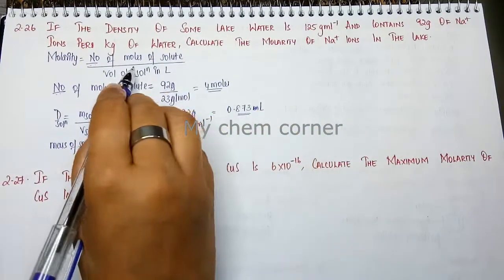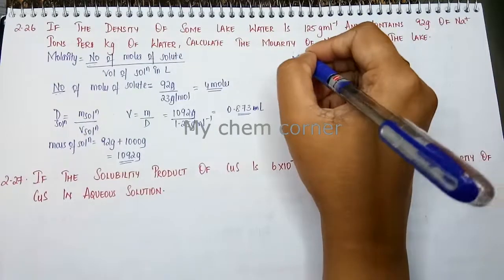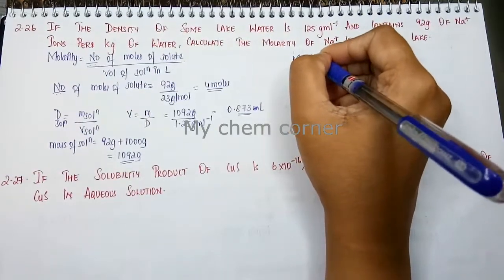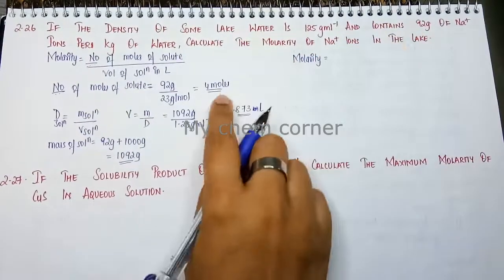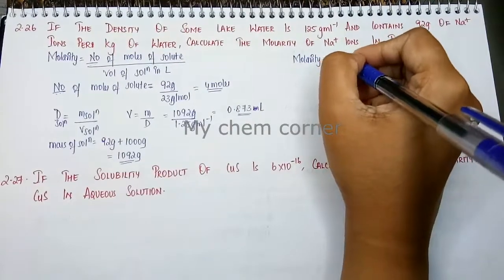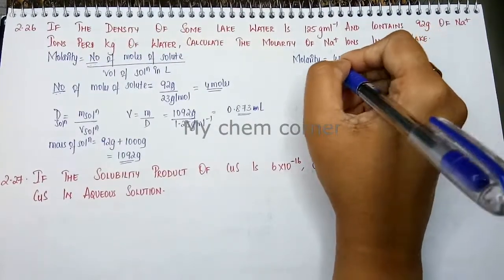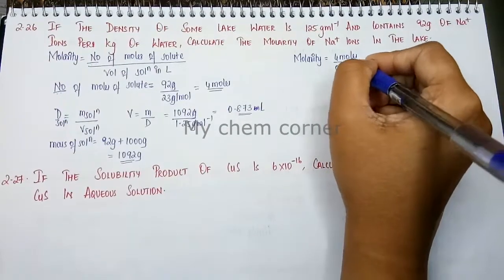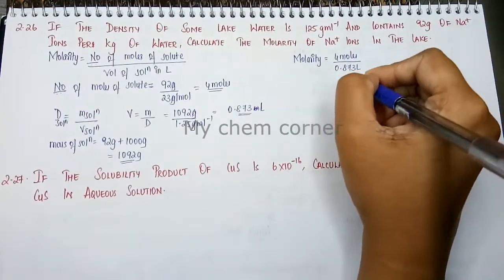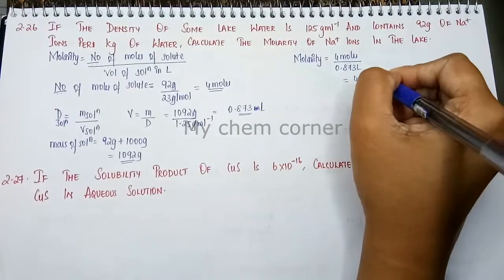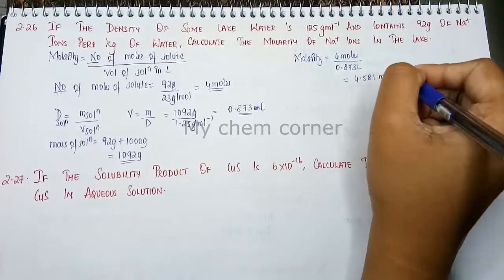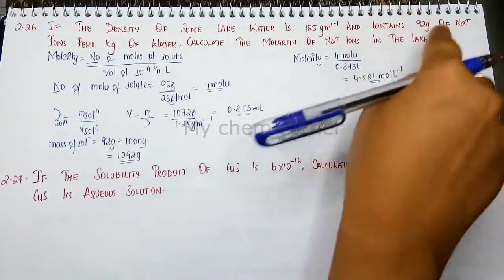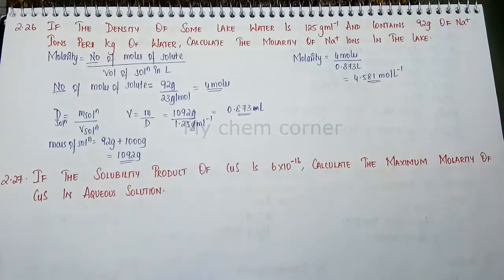Now when I substitute it back in the molarity equation, molarity equals number of moles, which is 4 moles, divided by volume, which is 0.873 liters. This equals 4.581 moles per liter. So we have used all the values to calculate the molarity.